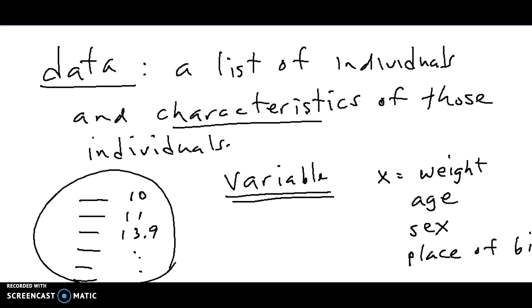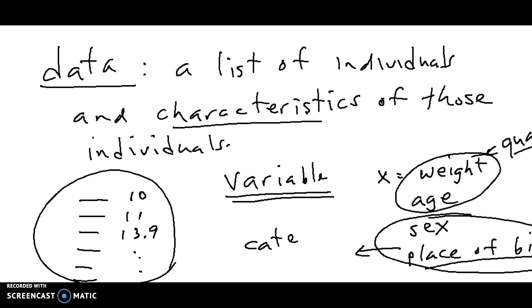And then there's two basic kinds of variables. Things like weight and age are called quantitative variables because they're numbers with measurements. It's sometimes called numerical as well. I'll use the word quantitative. And then things like sex and place of birth, you don't usually assign numbers to those. So you assign categories like sex, male and female, place of birth, Pacific Ocean, Atlantic Ocean, or something like that. And so those are called categorical variables. Okay. And that is it for the first lesson.